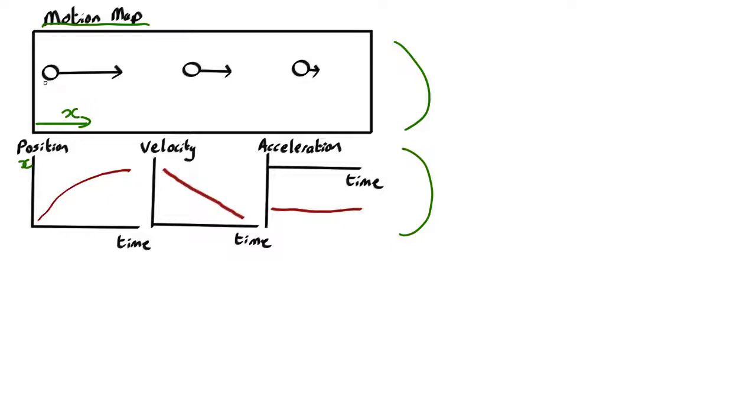Okay, so look at the motion map. What we see is that it's moving in a positive x-direction, so we want a positive velocity. It starts off going fast, then gets a bit slower, and then slower still.